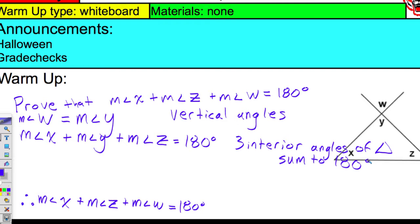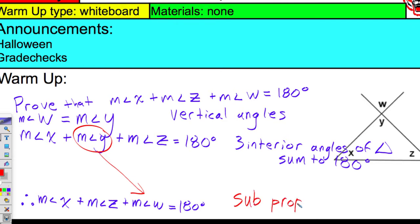What's next? Ellery, go for it. Using the substitution property, we already know that the measure of angle W equals the measure of angle Y, so you can just plug in Y for W down below. You have the measure of angle X plus the measure of angle W plus the measure of angle Z. We're basically going to swap out this Y and change it to a W. The reasoning is substitution property of equality. Go grab some candy.